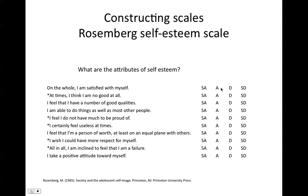Looking down the columns, he has strongly agree, agree, disagree, and strongly disagree. This scale has been validated and is a very well-designed survey scale. If someone were to go through and just circle all the answers down the same column, we would know right away when analyzing the data that they weren't being truthful.